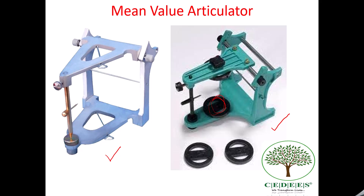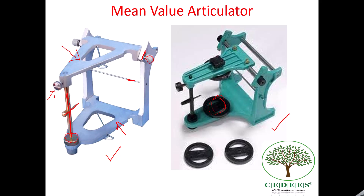Let us talk about the parts of a mean value articulator. We have the upper member, the lower member, the vertical rod, the incisal pin, the incisal guide table, and the thumb screw which basically holds the vertical rod and maintains the vertical of the articulator. We have the condylar elements, the condylar slot which is generally spring-loaded, and the occlusal plane analyzer which determines the occlusal plane.